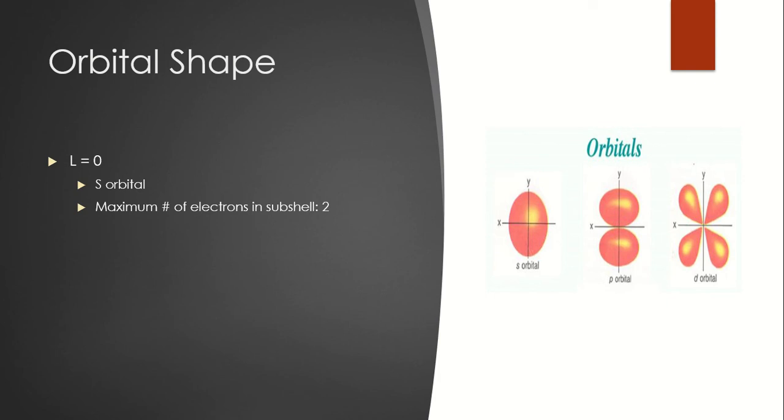So for the first one, the s orbital, it can hold a maximum of two electrons. And that's because of the ML value. So we know that L equals zero, so that means ML has to be negative zero to positive zero, which means it can only be zero. So two electrons max.